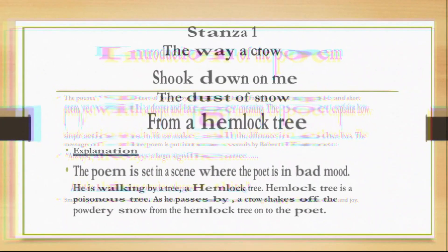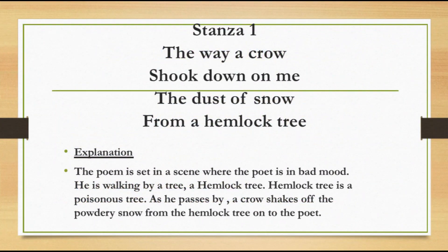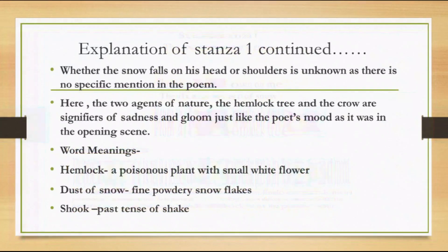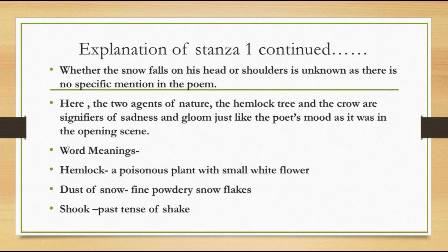Let's start with the explanation of stanza one. The poem is set in a scene where the poet is in a bad mood. He is walking by a tree — a hemlock tree. Hemlock tree is a poisonous tree. As he passes by, a crow shakes off the powdery snow from the hemlock tree onto the poet. Whether the snow falls on his head or shoulders is unknown, as there is no specific mention in the poem. Here, the two agents of nature — the hemlock tree and the crow — are signifiers of sadness and gloom, just like the poet's mood in the opening scene.